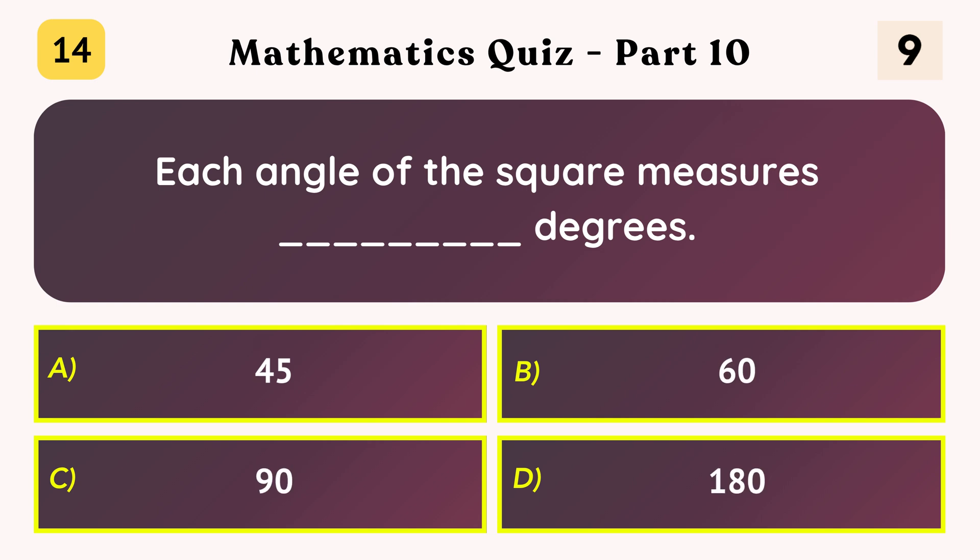Each angle of the square measures how many degrees? 90.